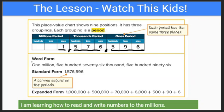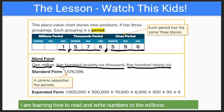There are three different ways you can write this number. We have the word form — everyone hates this one because it takes so long. They wrote it out: one million, five hundred seventy-six thousand, five hundred ninety-six. The second way is standard form — everybody loves this one because that's just the normal way you write the number: one million, five hundred seventy-six thousand, five hundred ninety-six.